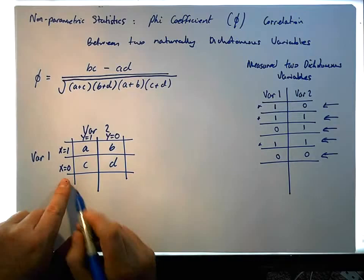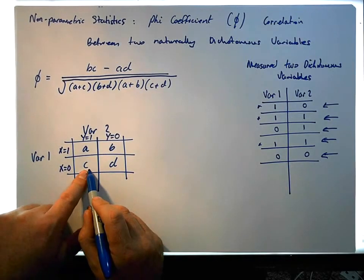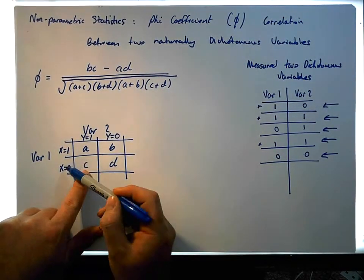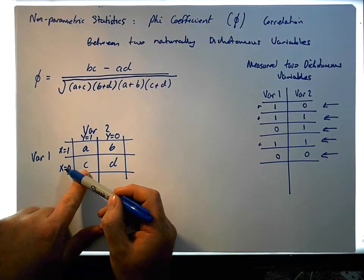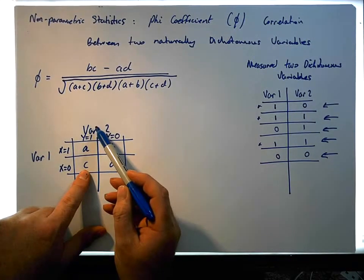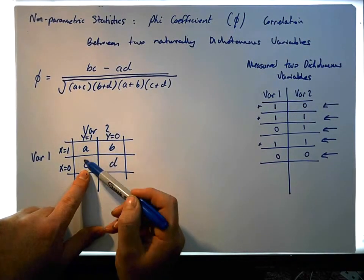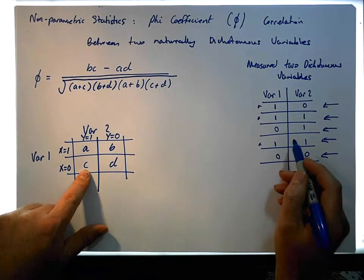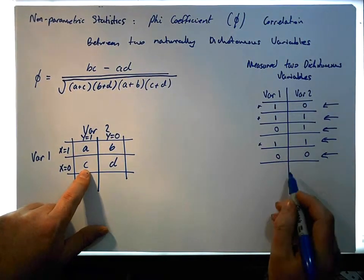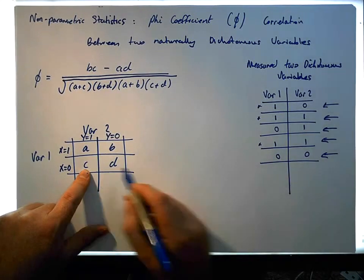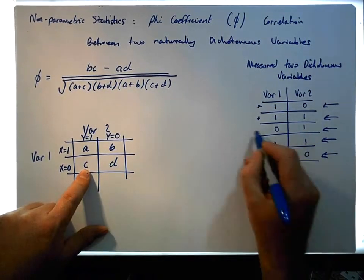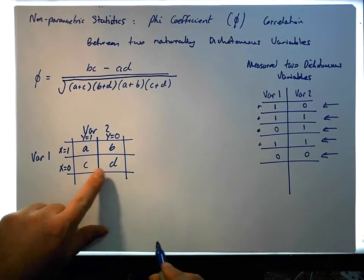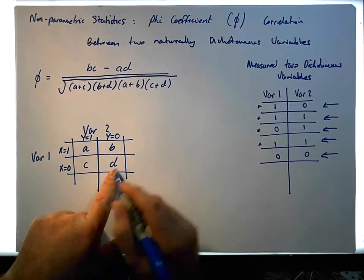Cell C represents var1 equals zero and var2 equals one — that also occurred once. And cell D represents when both variables are zero.